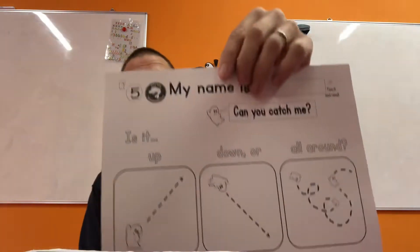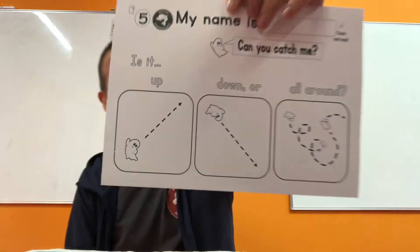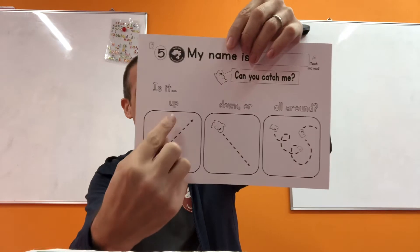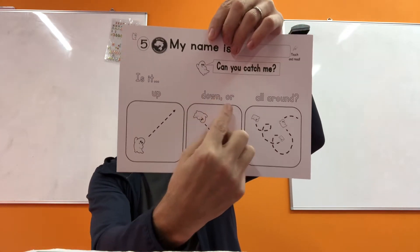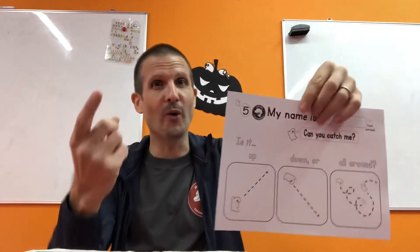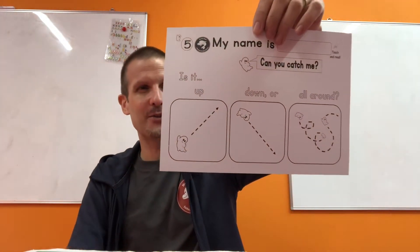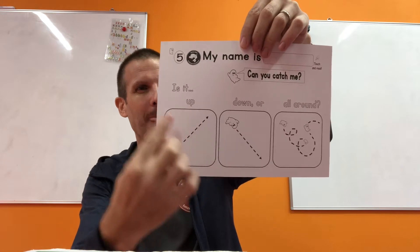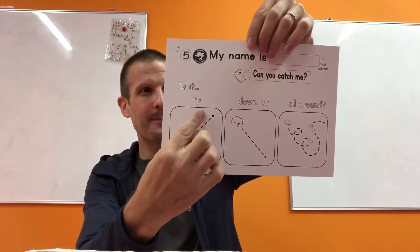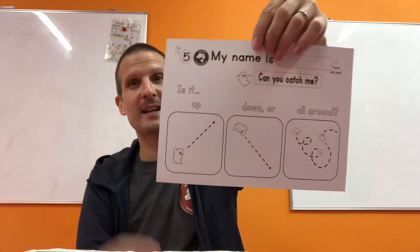Okay, number five. Here we go, look at this — this is neat, right? That's so cute. Is it up, down, or all around? Oh, it sounds like a song. Our Halloween song is ready! So this is up. Is it up, down, or all around? Don't forget to say it as you're tracing it — very important.